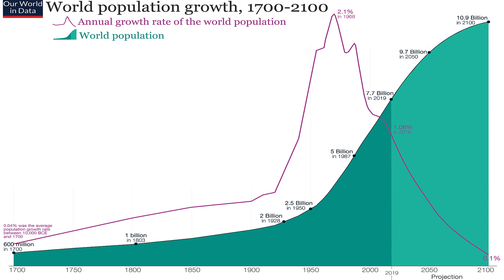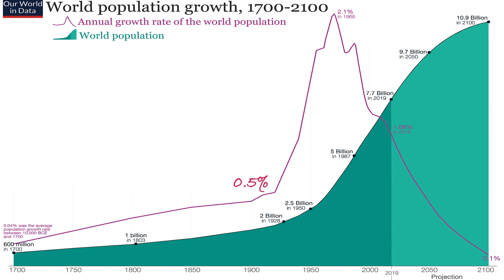For example, the peak growth was in 1968 at about 2%. In 2019, it was about 1%. Around 1900, it was close to half a percent per year. And if you go all the way back to 1700, it looks to be somewhere between 0.2 and 0.3%.